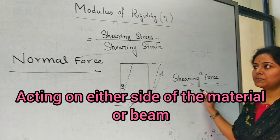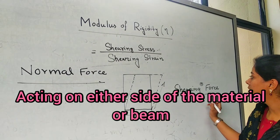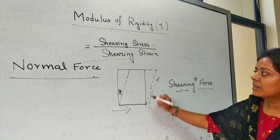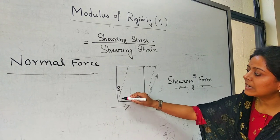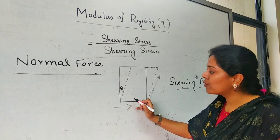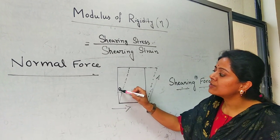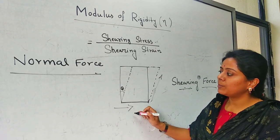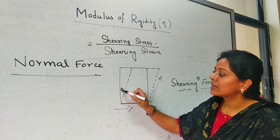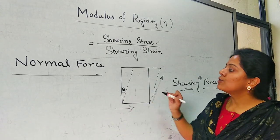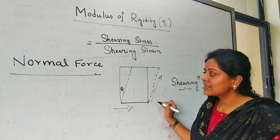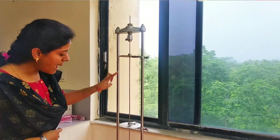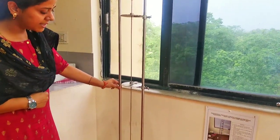That is the difference between normal force and shearing force. You can see this material I have drawn. Here we can see that by applying force, we can find an angular twist or angular shift. In this experiment, we are going to determine this theta — load versus theta. That is what this experiment is all about using Barton's apparatus.